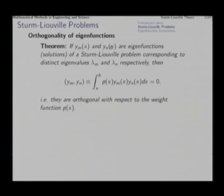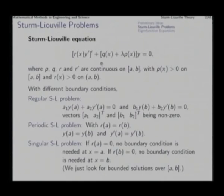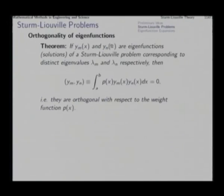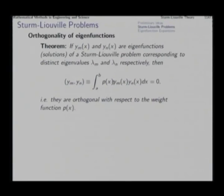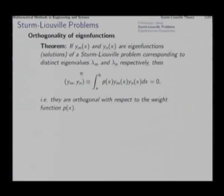If y_m and y_n are two eigenfunctions (solutions) of the Sturm-Liouville problem corresponding to distinct eigenvalues λ_m and λ_n, then they turn out to be orthogonal to each other with respect to the weight function p(x). This means the integral from a to b of p(x) y_m y_n dx equals 0 for m not equal to n.